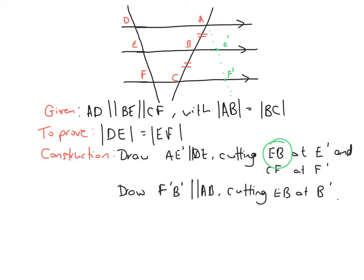Next, we draw F'B', which is parallel to line AB, cutting EB at B'. So from point F' we draw a line parallel to AB going up, and where it cuts the middle line EB we label that B'. The green line is parallel to DEF and the red line is parallel to ABC.